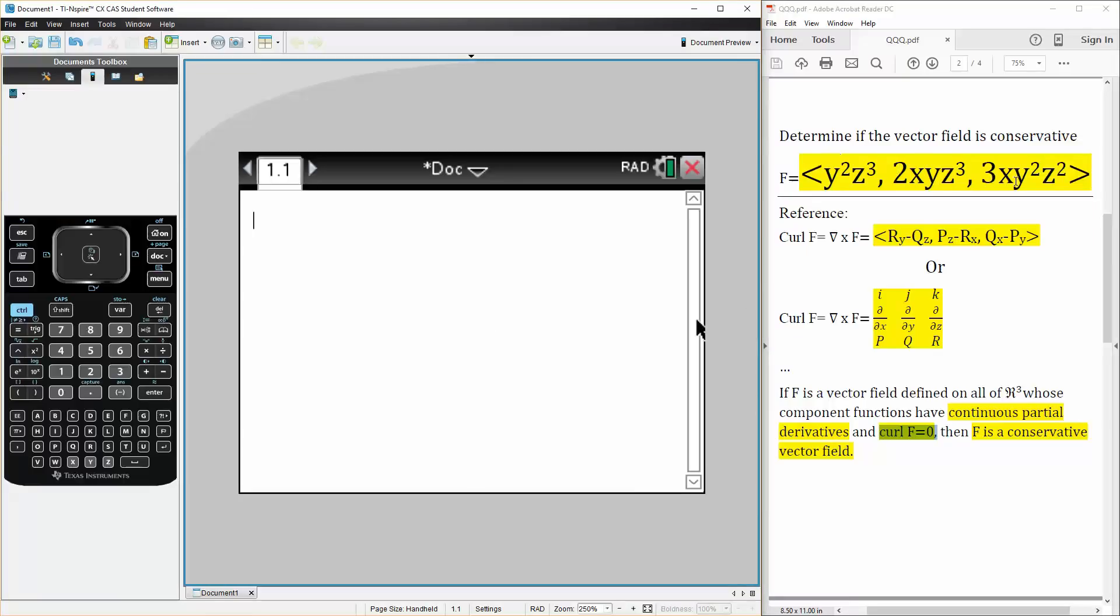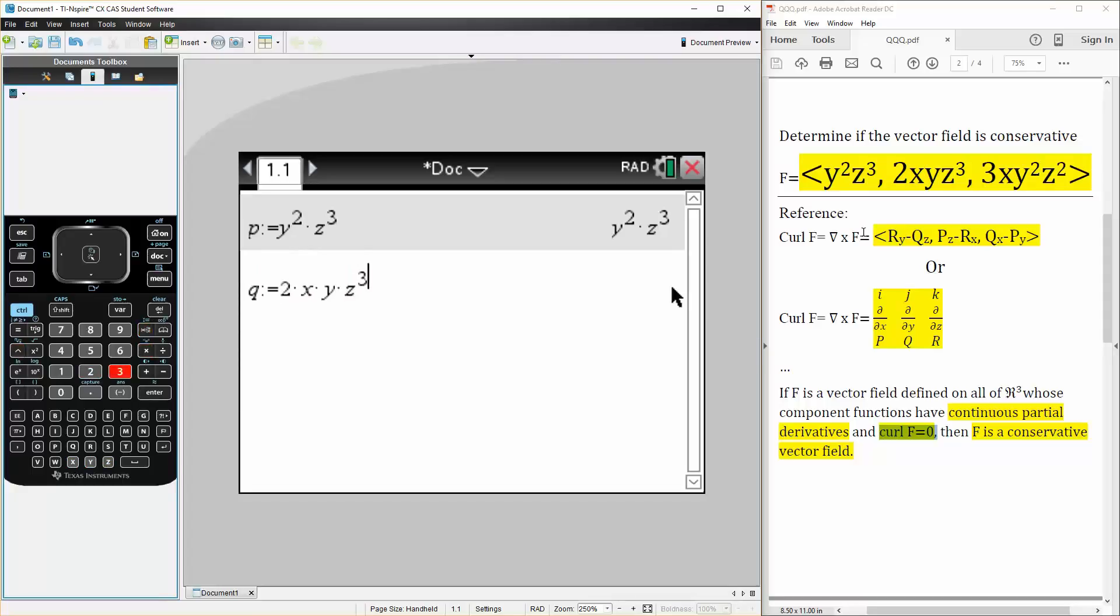We have p, q, r so we can define them. We can say that p is defined as y² times z³. And our q would be defined as 2 times x times y times z³.